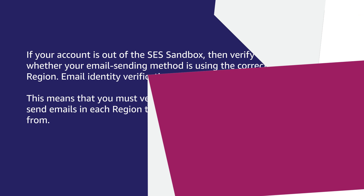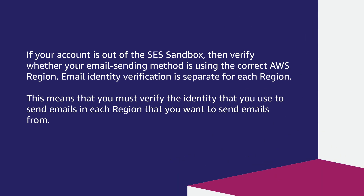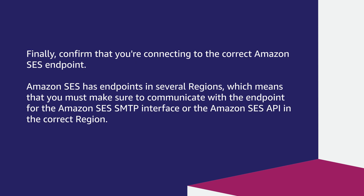If your account is out of the SES sandbox, verify whether your email sending method is using the correct AWS region. Email identity verification is separate for each region, which means you must verify the identity that you use to send emails in each region that you want to send emails from. Finally, confirm that you're connecting to the correct Amazon SES endpoint. Amazon SES has endpoints in several regions, so you must make sure to communicate with the endpoint for the Amazon SES SMTP interface or the Amazon SES API in the correct region.